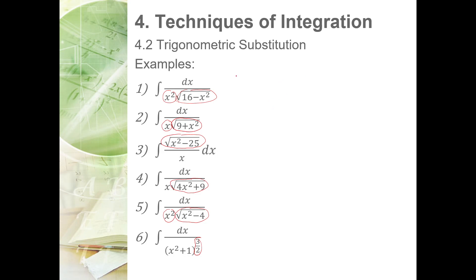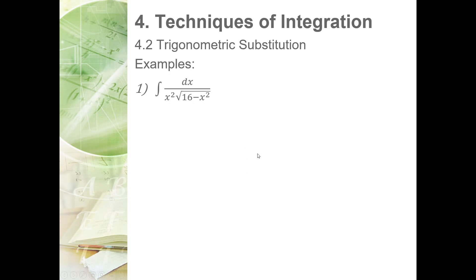Let's answer each problem to understand how to apply the steps in trigonometric substitution. For number one, the first step is to identify what particular format you have in your equation. This expression is constant minus variable, so it is in the format of a squared minus u squared. This formula gives us the trig substitution u equals a sine theta. Declaring variables: a squared is 16 and u squared is x squared.